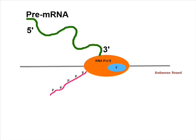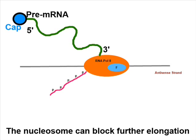During elongation, the RNA polymerase II slides along the strand and produces pre-mRNA. The 5' end needs a cap. Further elongation can be stopped by the nucleosome. At the same time, splicing occurs.